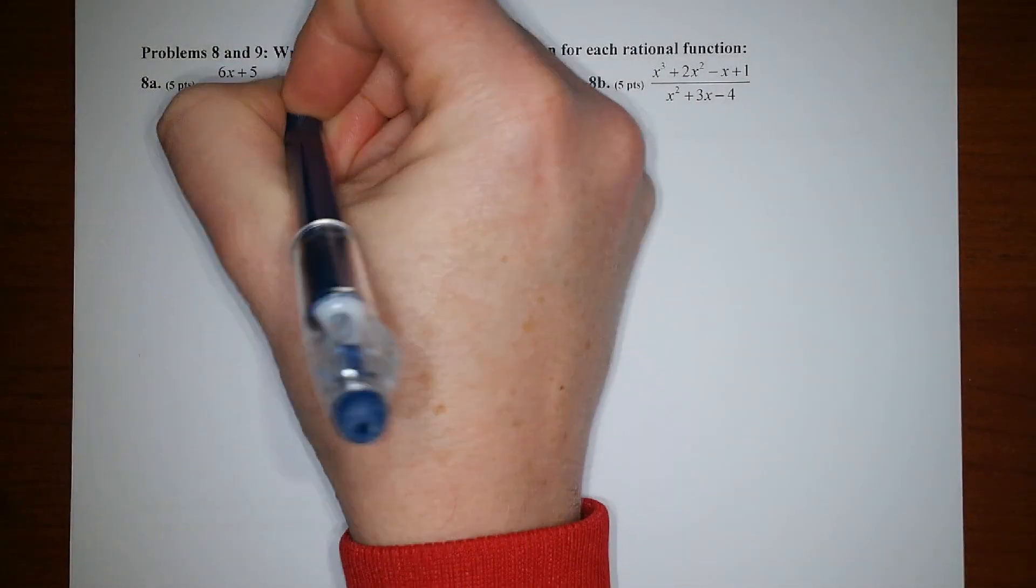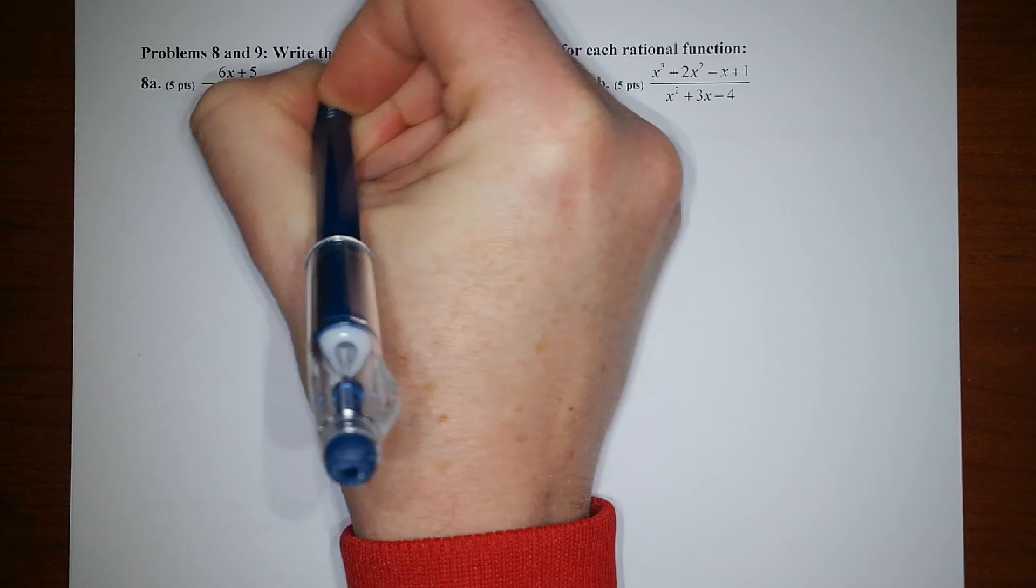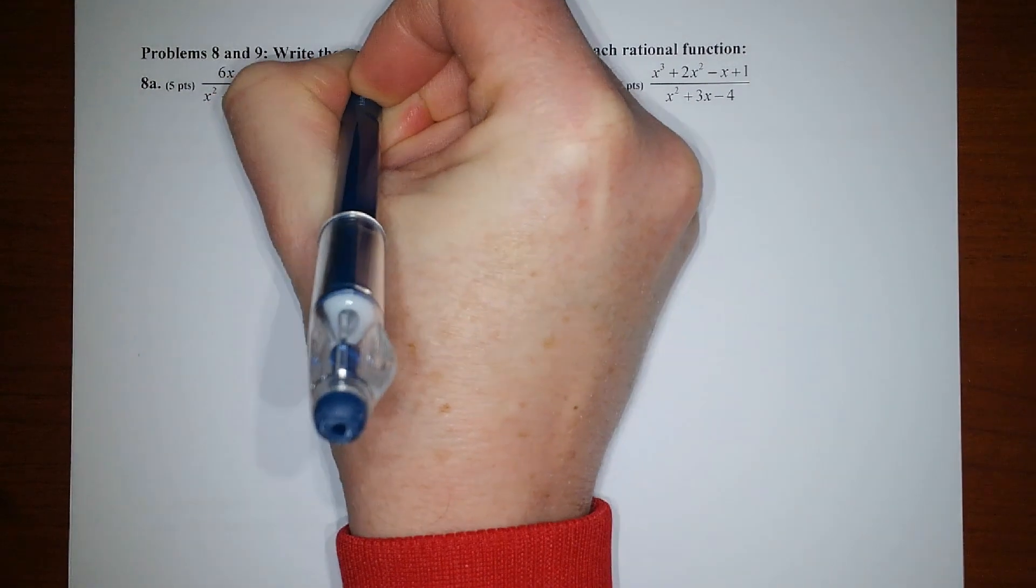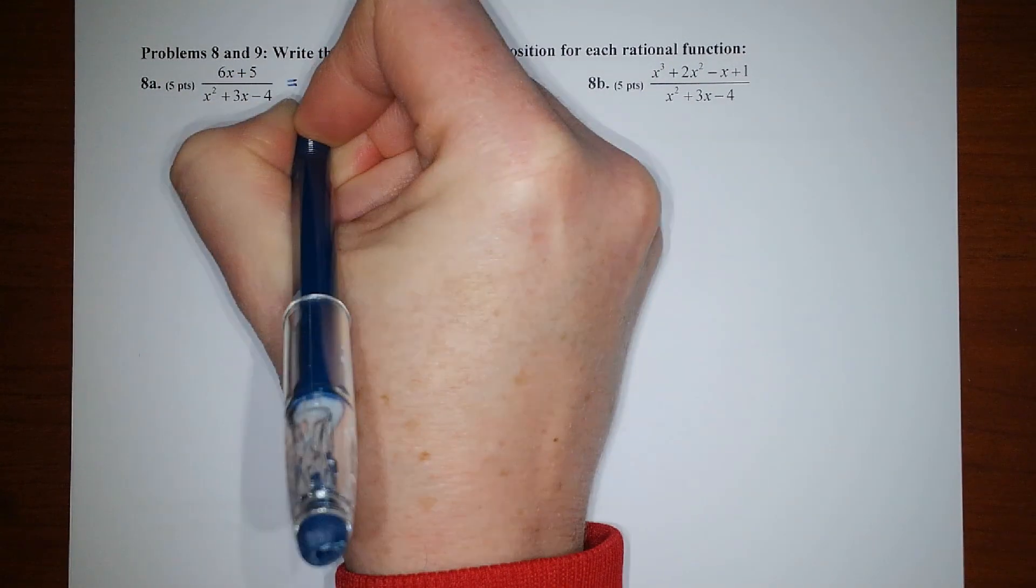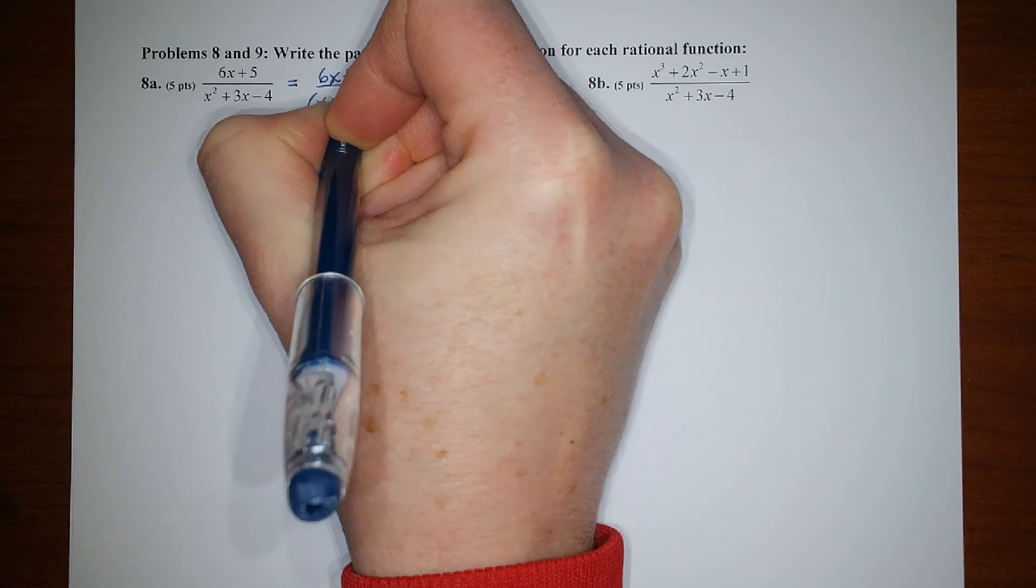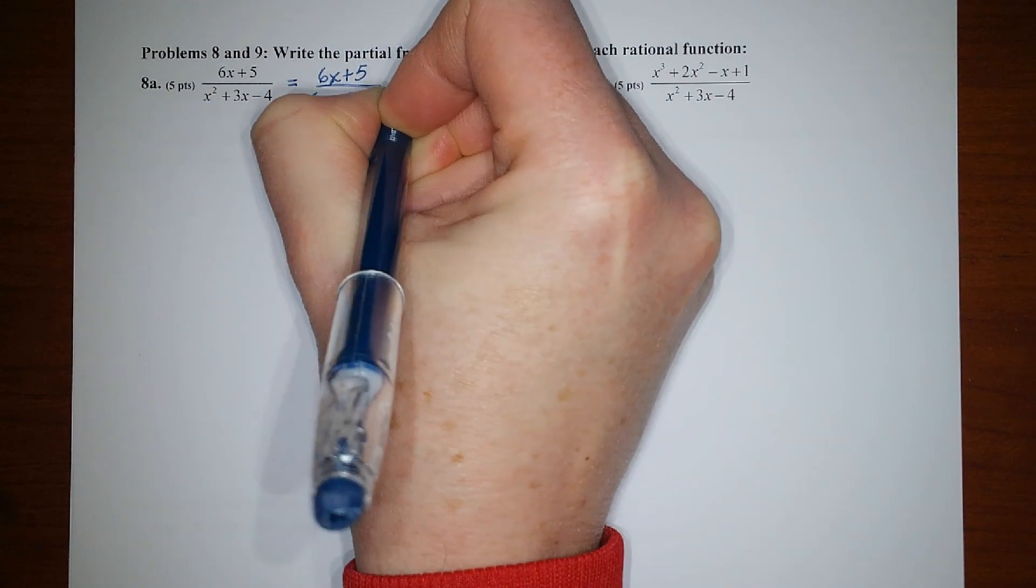All right, my friends, so let's get started on the partial fraction decomposition here. I'm going to start by just factoring the denominator. Let's see, what do we have? x plus 4 times x minus 1.